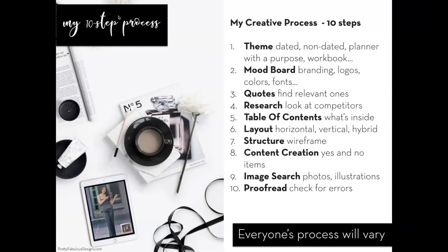Here's my 10-step process. First, I choose a theme and decide if I'm doing a dated versus non-dated planner. Second, I create the mood board, because that pretty much solves all of my branding issues. Third, I gather quotes because I find those inspirational and they set the tone for the planner. Number four, I do some research and look at what else is out there. Number five, I put together a table of contents. Number six, I determine if I want it to be horizontal, vertical, or some sort of hybrid.